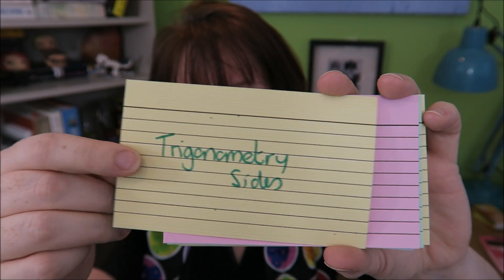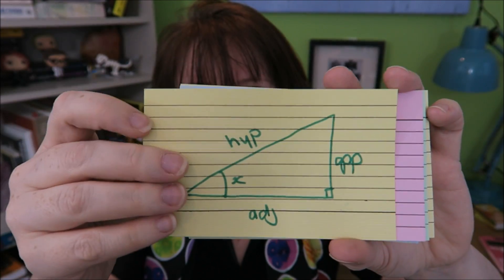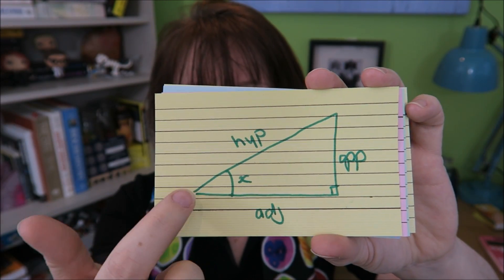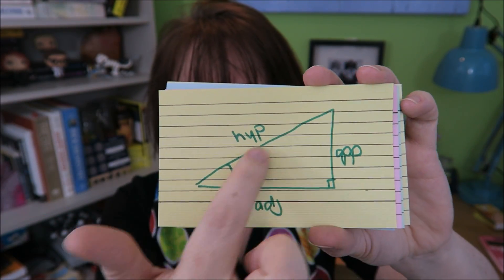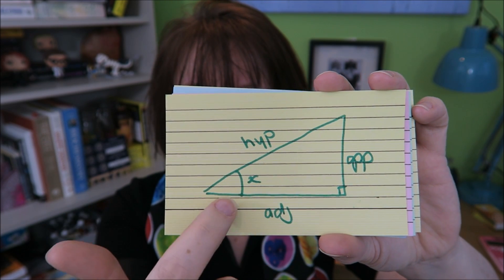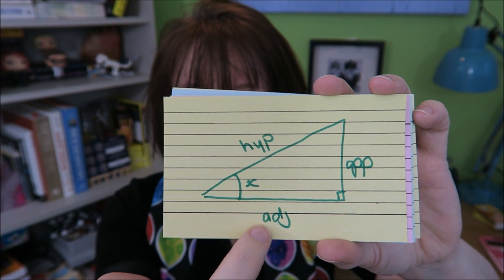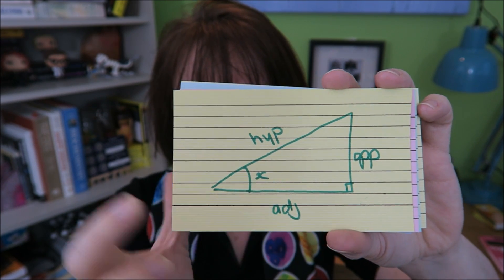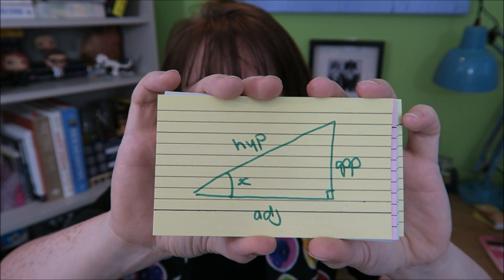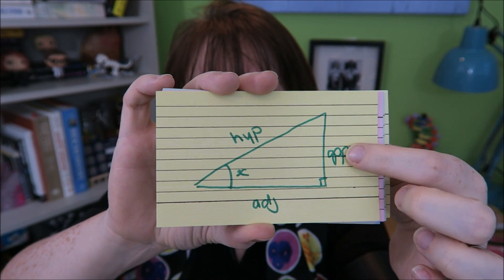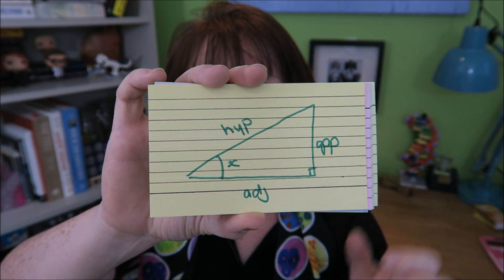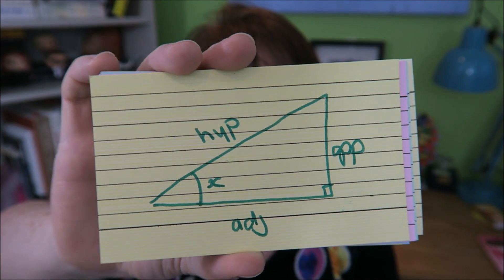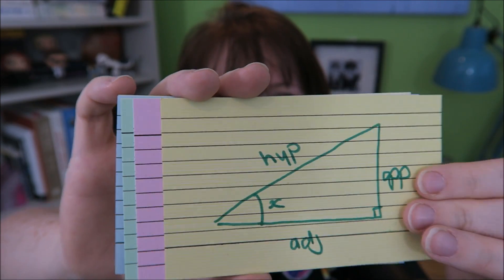Labeling your sides in trigonometry: if this is your angle here, your hypotenuse is the one opposite the right angle. The one adjacent, or next to the angle, is your adjacent. And the one that is opposite to your angle becomes your opposite.